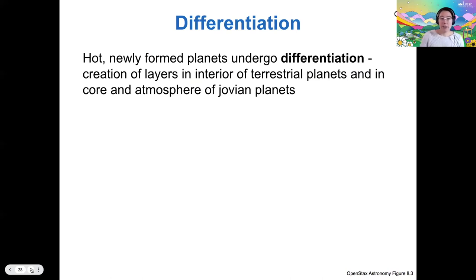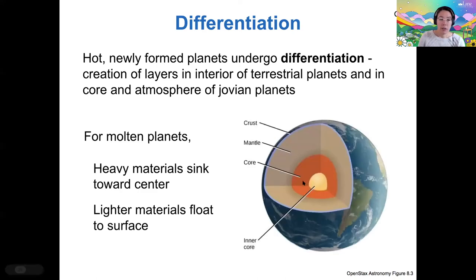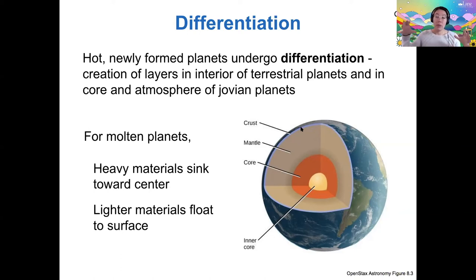Differentiation is the process where you create layers inside the terrestrial planets and in the cores of the gas giants. If you have a molten planet, the heavy material sinks down. For example, the inner and outer cores of the Earth are made of heavier metals, whereas Earth's mantle and crust are made of rocky materials. When the Earth was molten, those dense metallic materials sank into its core while lighter materials floated to the surface. This has happened for all terrestrial planets, the cores of the Jovian worlds, and some dwarf planets as well.